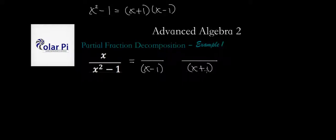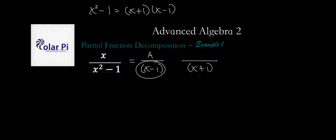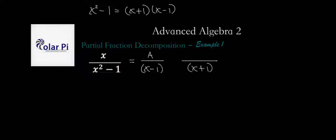Whenever the denominators here are linear in form — maybe from having watched example zero or from what you remember in class — you'll know that the numerator here must assume a constant form. In other words, when the denominator is first degree, the numerator is zero degree, meaning the numerator is a constant. So the basic rule is: when the denominator is linear, the numerator must be a constant. Since this denominator is also linear, its numerator is some other constant. A and B may be equal, but it's very unlikely.